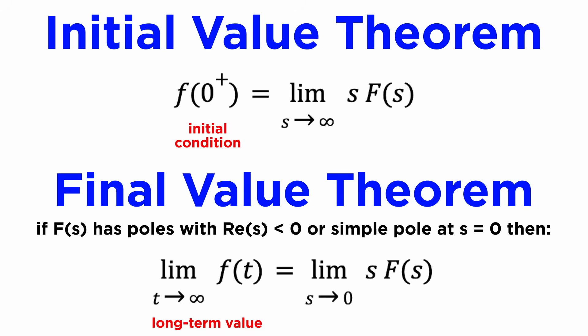We should also mention two more identities concerning the Laplace transform. The initial value theorem states that as the magnitude of s goes to infinity, the value of s times the Laplace transform capital F(s) of any function approaches the initial value of that function in the time domain. The final value theorem says that the converse is also true in the limit of time going to infinity, but only if F(s) has asymptotically stable poles, or a simple pole at s equals zero, which corresponds to a constant long-term value.